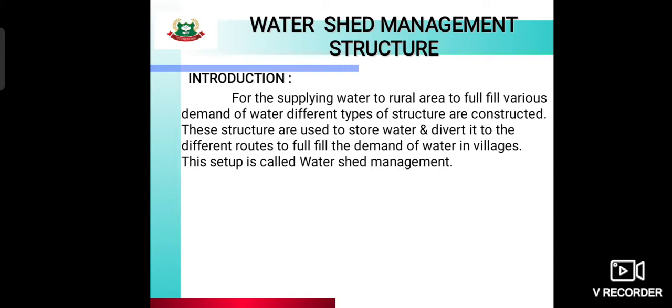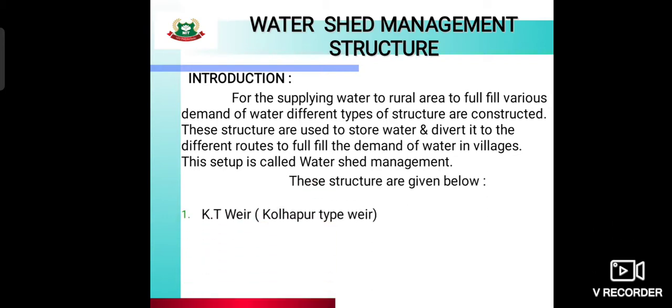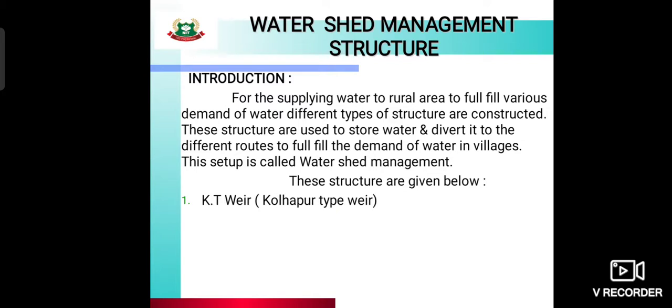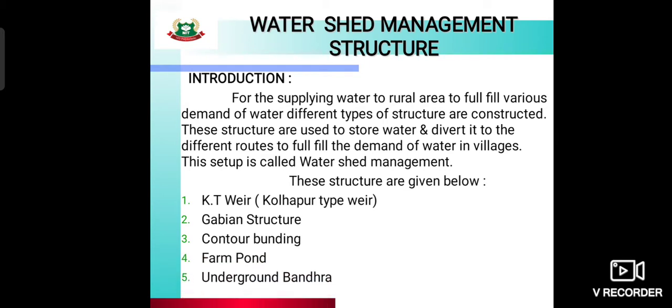The types of watershed management structures used are: KT weir (also called Kolhapur Type weir), gabion structure, contour bunding, farm pond, and underground bandhara. Now we will see the farm pond in detail.